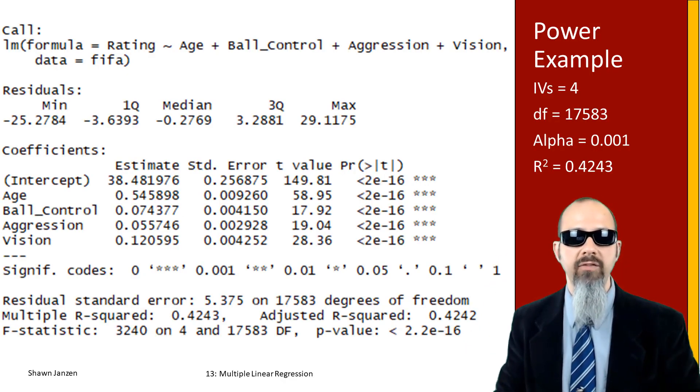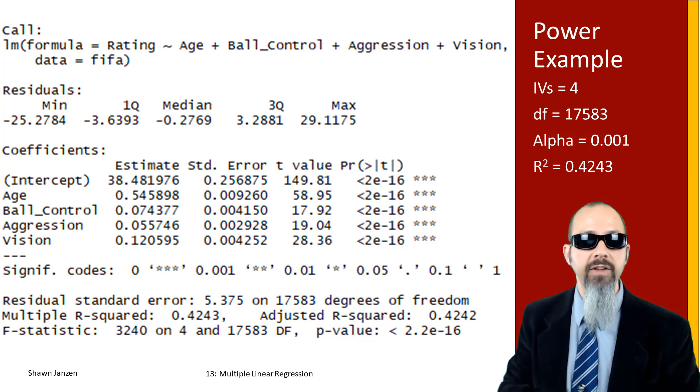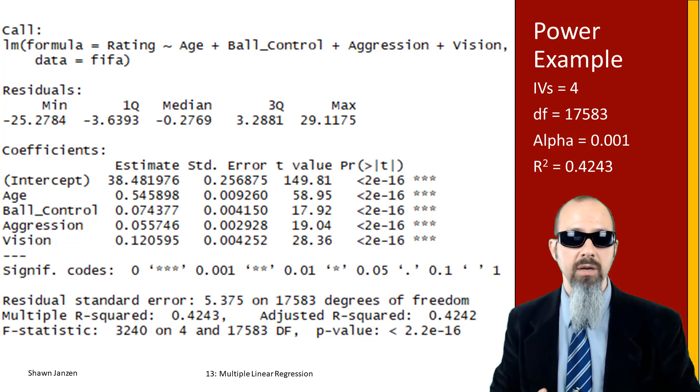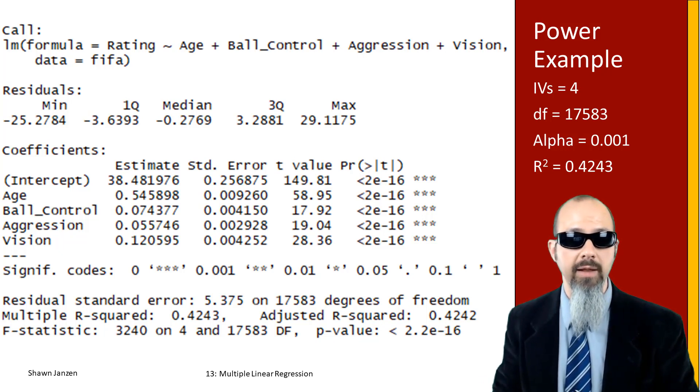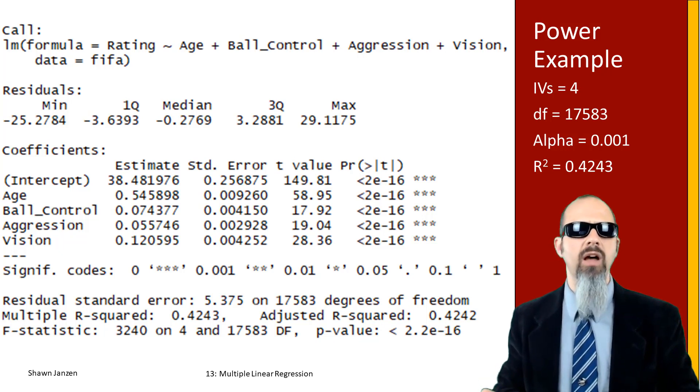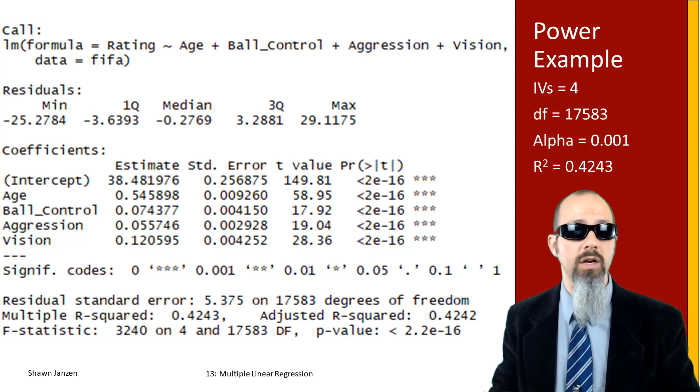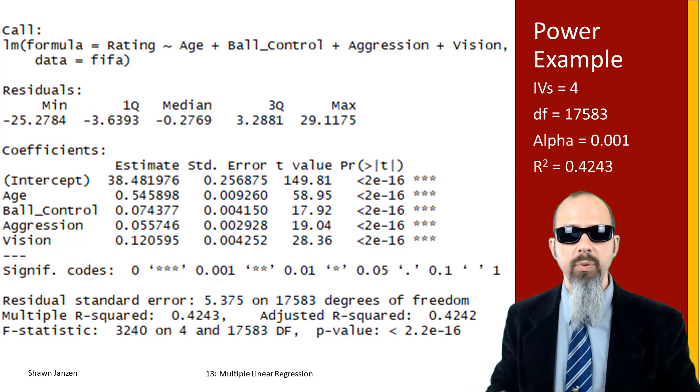Using the example from a few previous lecture videos, I have a screenshot from the FIFA data set where we were predicting a footballer's rating using their age, ball controllability, level of aggression, and vision. We have four independent variables, degrees of freedom equal to 17,583, and I'm using a very small alpha of 0.001 because the sample size was so large.